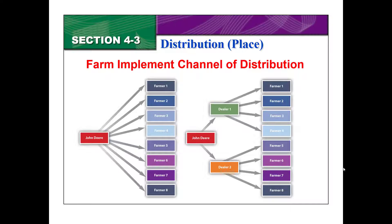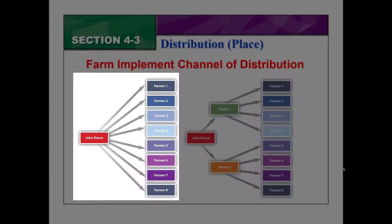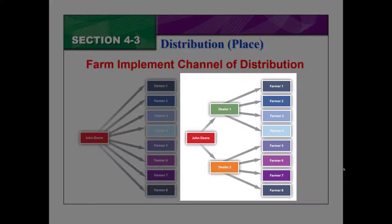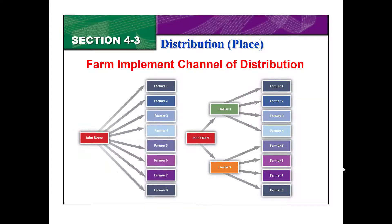This is an example of a channel of distribution, and there are two types shown here. On the left, we've got John Deere going directly and selling to farmers. For example, my dad and brother bought a new combine and actually went to the John Deere factory, watched it being built, and drove it home directly from John Deere. On the right, John Deere sells to an implement dealer, and those implement dealers sell to farmers. All of those components are part of place.